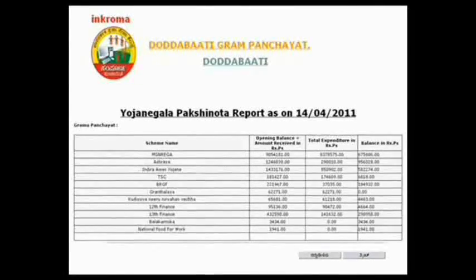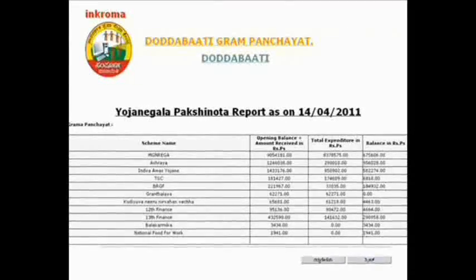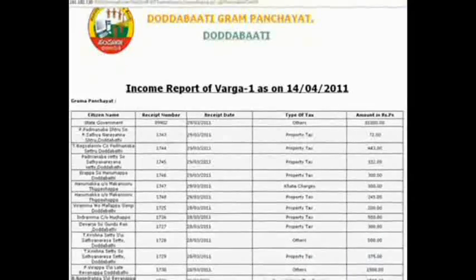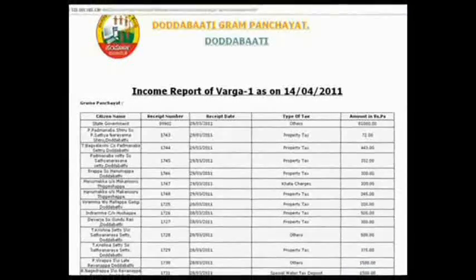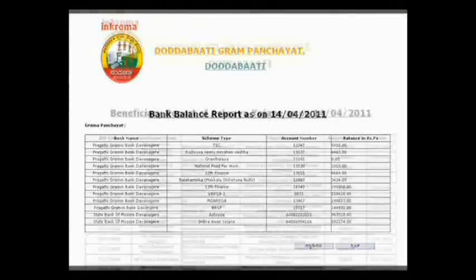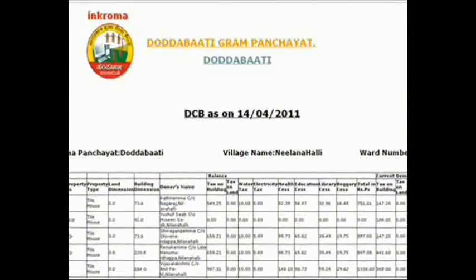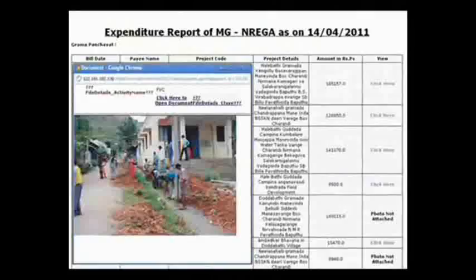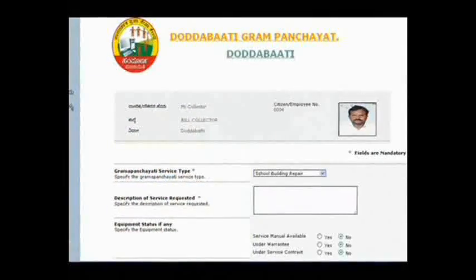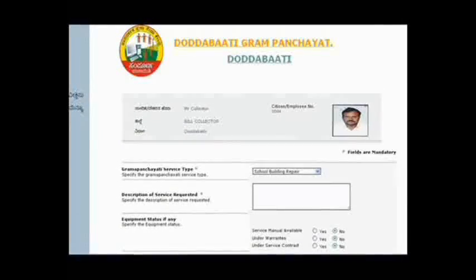Here are a few examples of available reports: how much money was received through central and state government grants; the Gram Panchayat tax collection; the Gram Panchayat bank balance; Ashriya Yojani beneficiary report; the taxpayers list; property owners list; Gram Sabha report; NREGA project report and expenditure; citizens grievance and complaint register. In the future, one can also obtain many certificates such as income certificates and others.